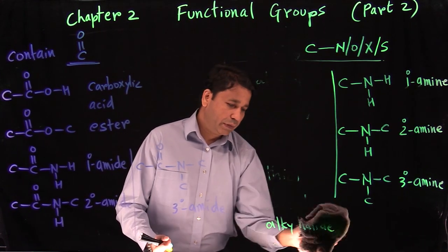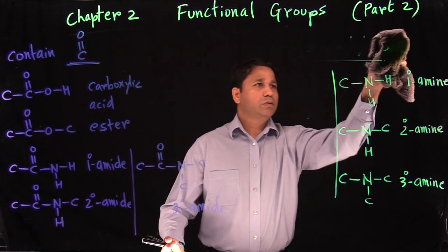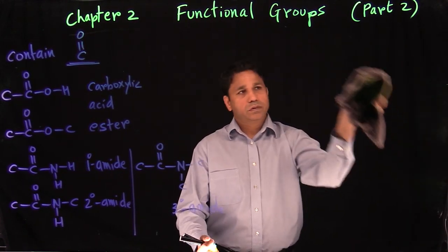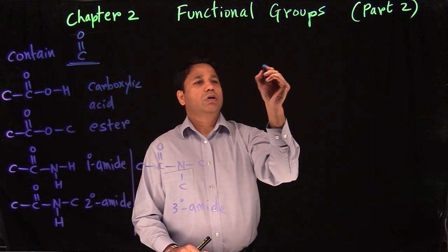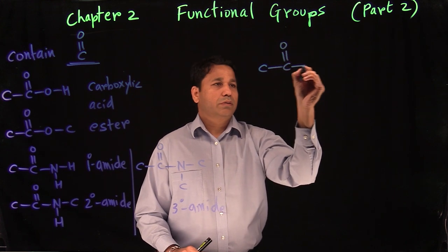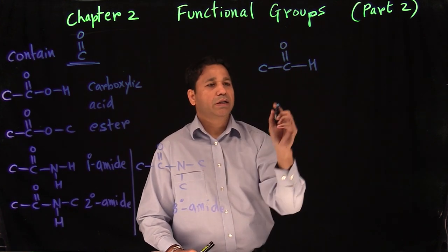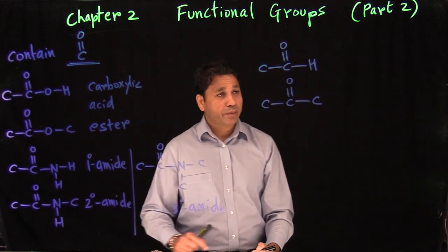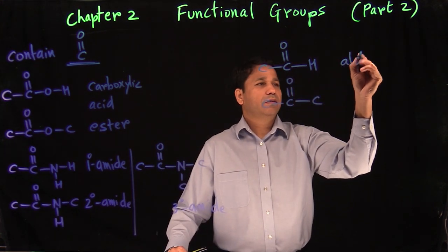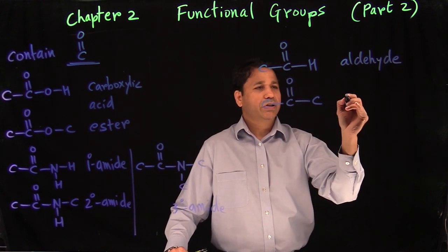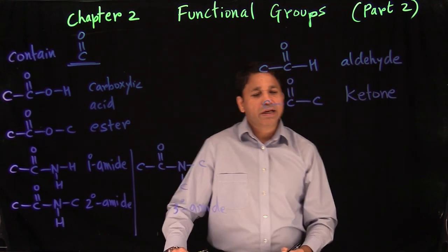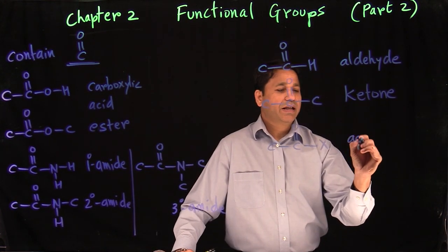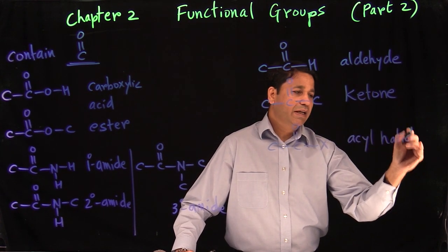There are a couple more in this category. With a hydrogen directly attached to the carbon-oxygen double bond, that becomes an aldehyde. Replace that hydrogen with a carbon and you get a ketone. And the last one — when you have a halogen attached to the carbon-oxygen double bond — that is acyl halide, similar to alkyl halide.